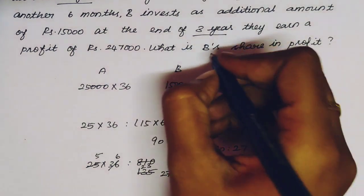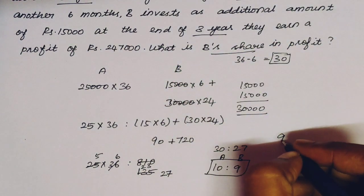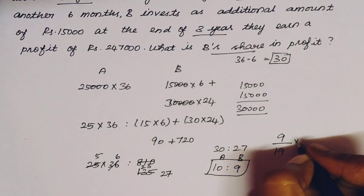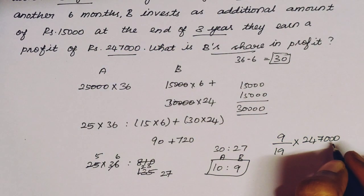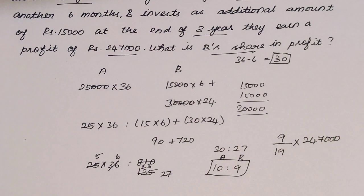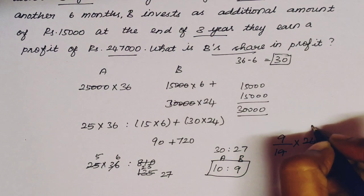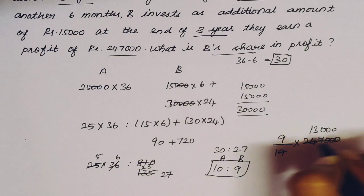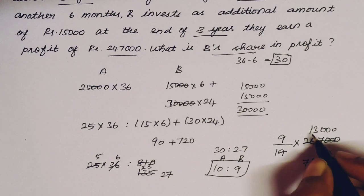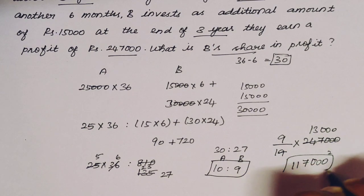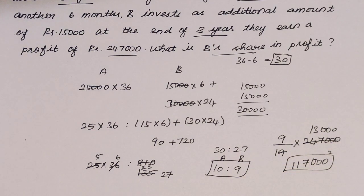The profit ratio is 10 : 9. B's ratio is 9. Total = 10 + 9 = 19. Total profit is Rs. 2,47,000. B's share = (9/19) × 2,47,000. Simplifying: 2,47,000 ÷ 19 = 13,000. So B's share = 13,000 × 9 = Rs. 1,17,000. That is B's share of the profit.